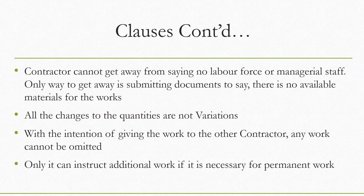If such a situation has happened, the contractor can raise a claim, go for a dispute resolution method, or go for litigation. You cannot omit work with the intention of giving it to another party. Omissions can legitimately be done if that part is not necessary for the project, or if you are not in a sufficient financial level to carry out that part of the work — that is acceptable. But you cannot give it to another person.